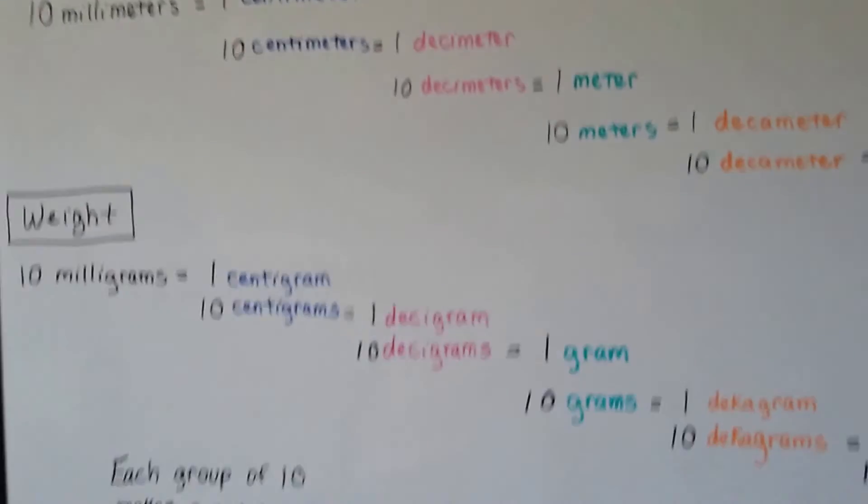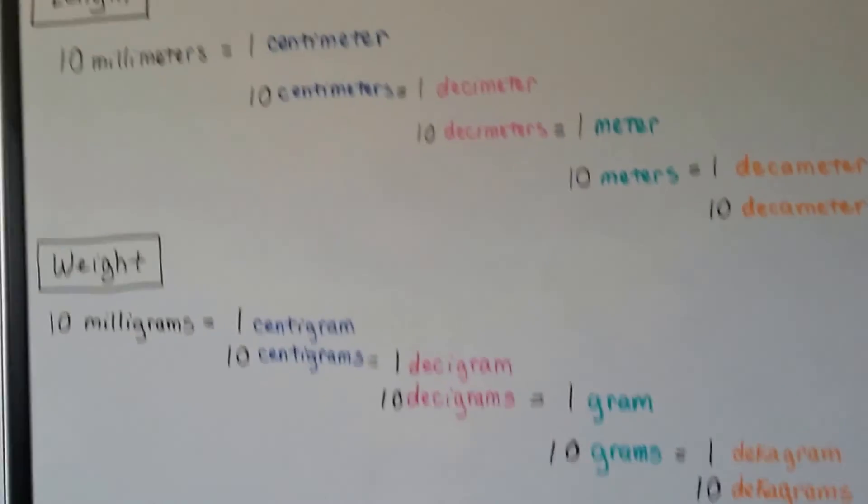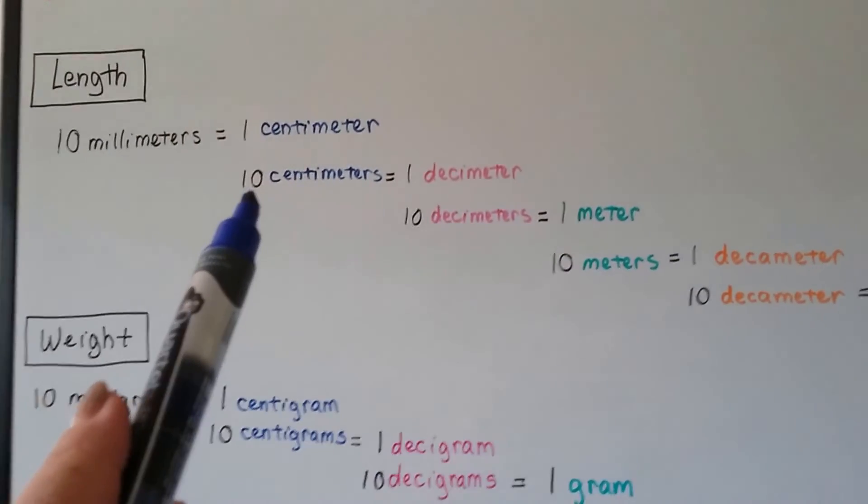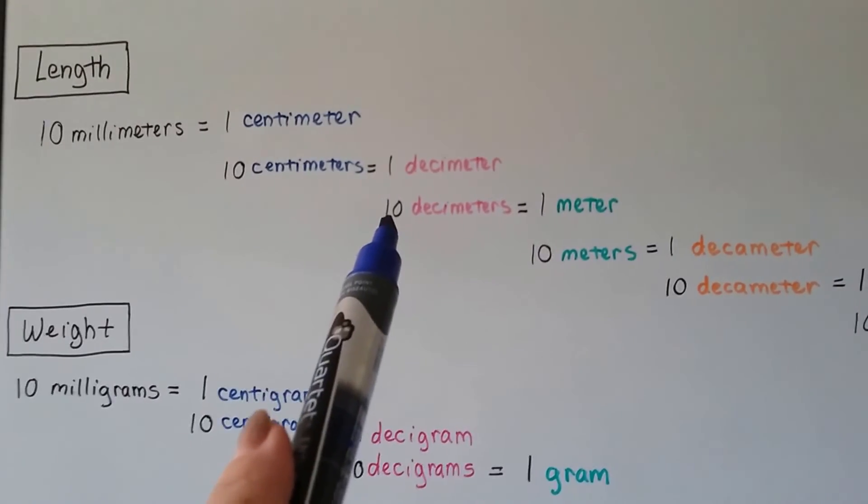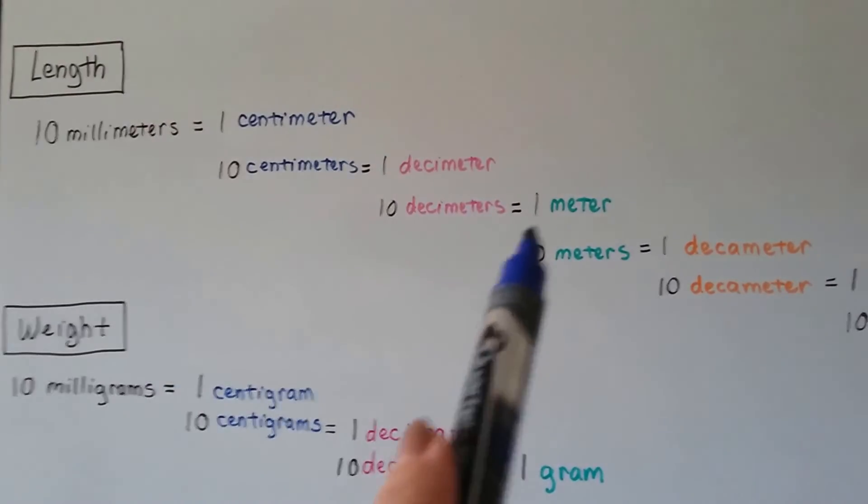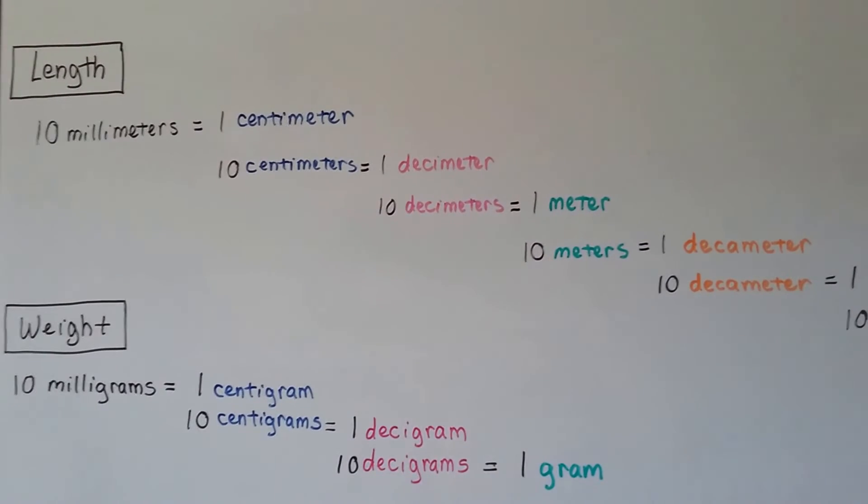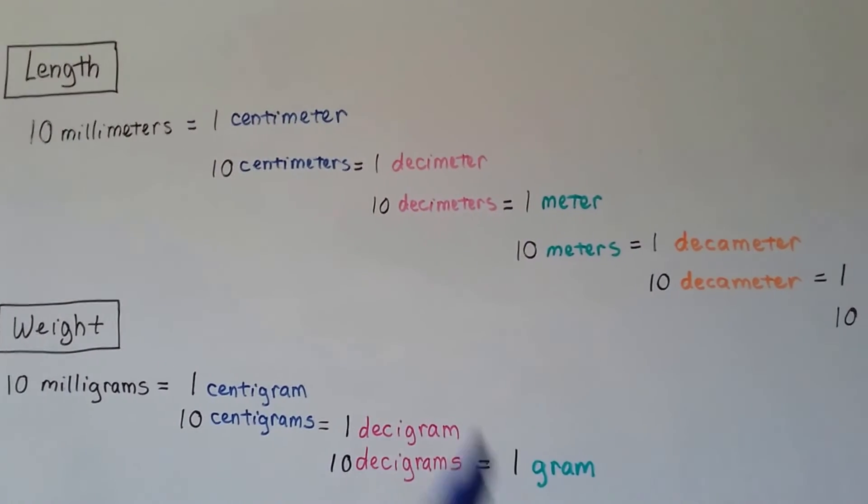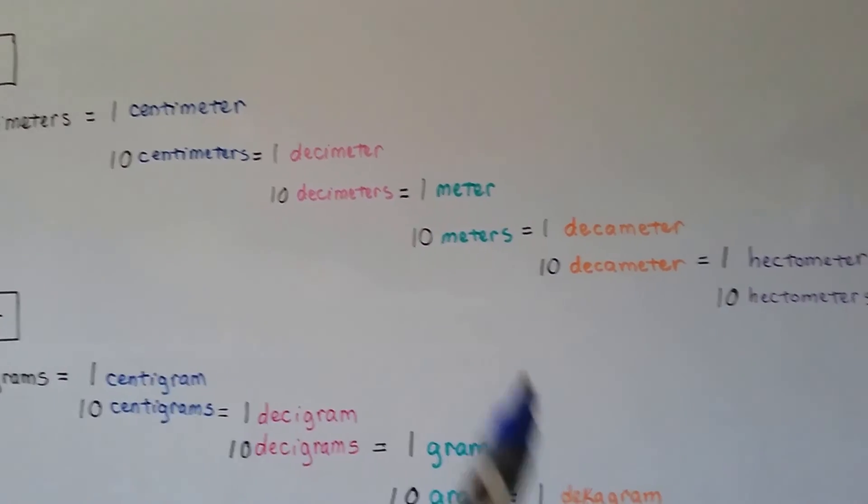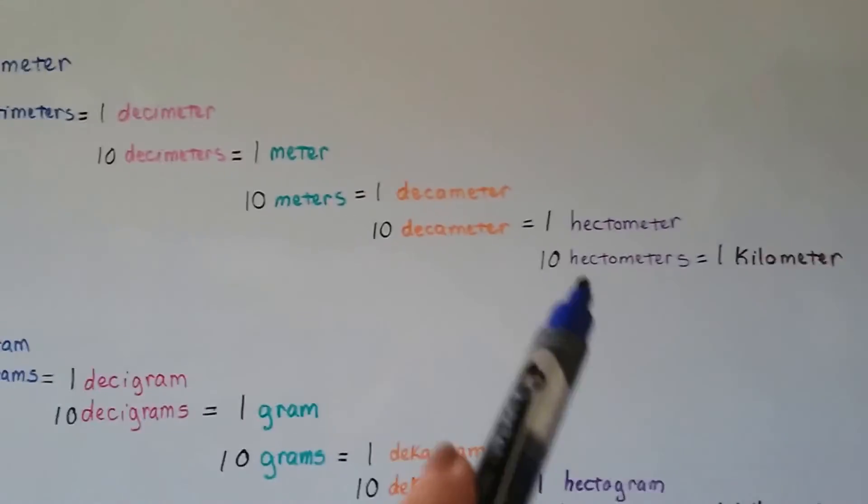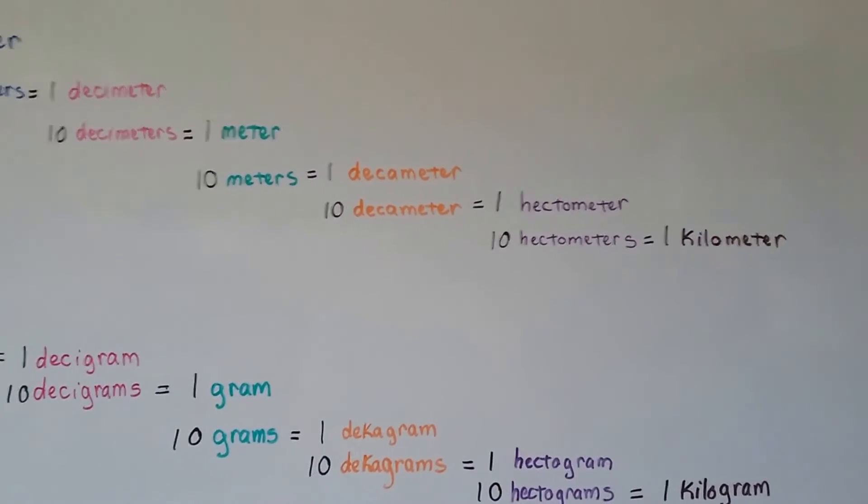And every group of 10 makes a new size. So for length, we could go from 10 centimeters to one decimeter. Once we get to 10 decimeters, we got to one meter. And when it gets up to 10, then it goes to decameter. When those get up to 10, it goes to hectometers. And when that gets up to 10, it goes to kilometer, right?